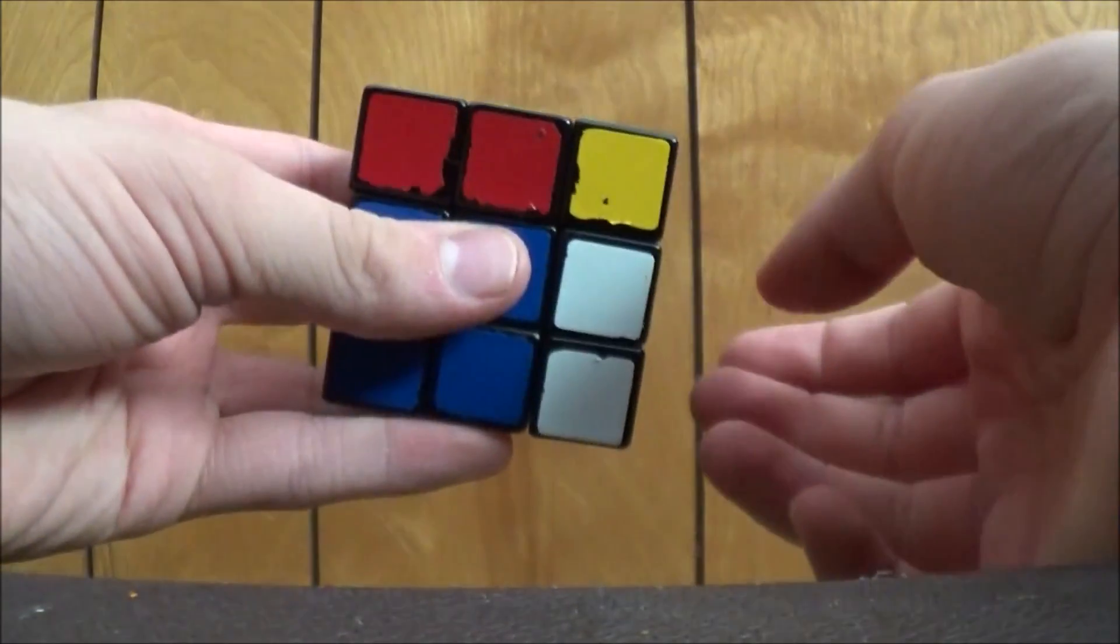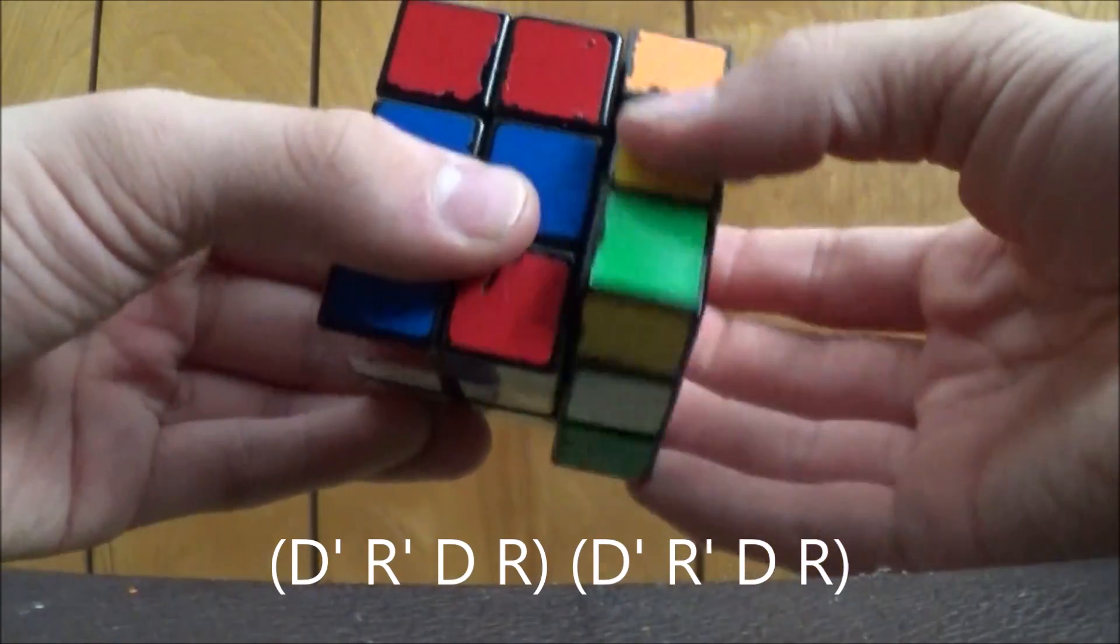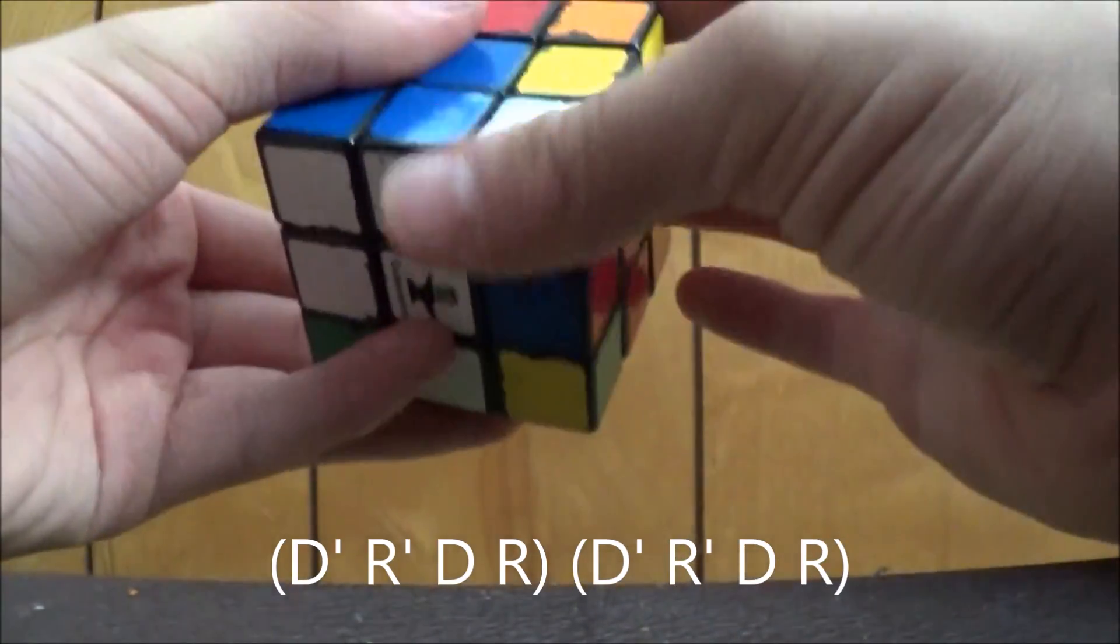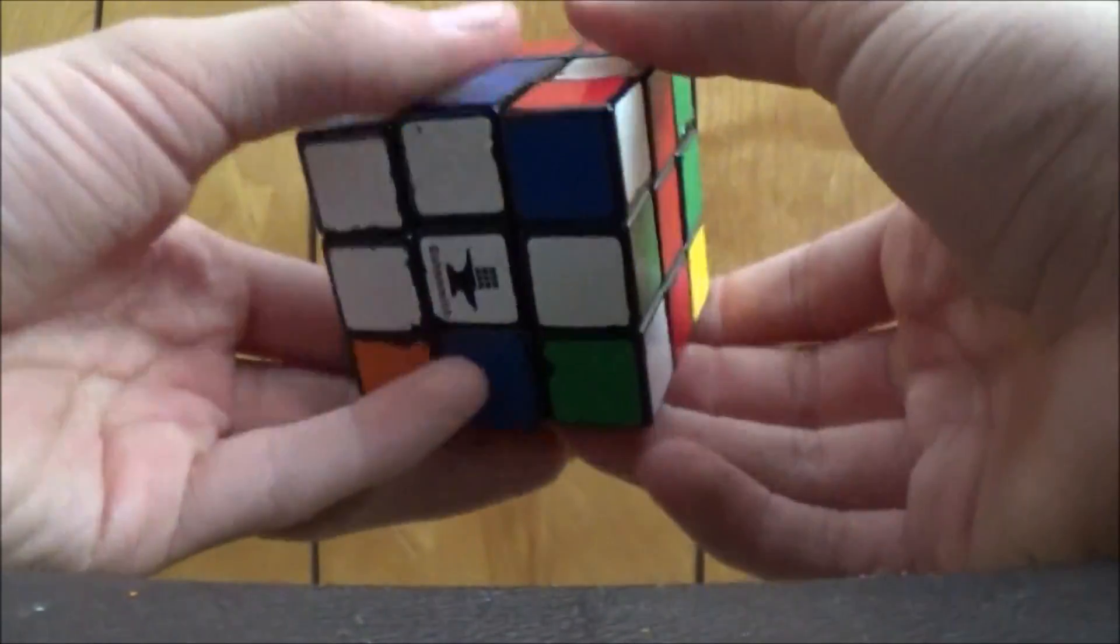You rotate the top just like before, and you do the exact same thing. D prime, R prime, D, R, D prime, R prime, D, R.